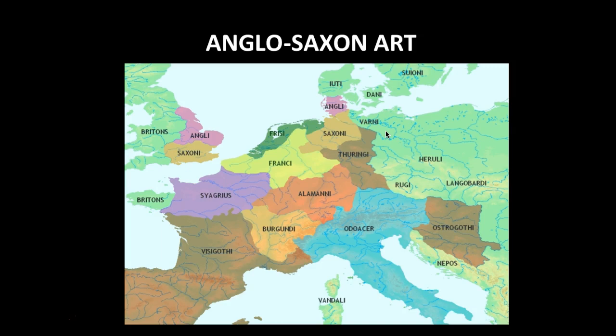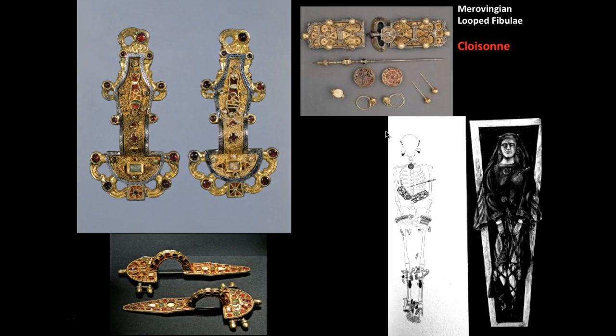One of the pieces chosen for Anglo-Saxon art is the Merovingian Looped Fibulae — pronounced either 'Merovingian' with a hard G or 'Merovingian,' both seem to work. On the right-hand images you can see it is jewelry of a Merovingian queen, shown alongside an X-ray of where the pieces were found on her actual body. Notice she's wearing lots of jewelry — these are the different types that were buried with her.